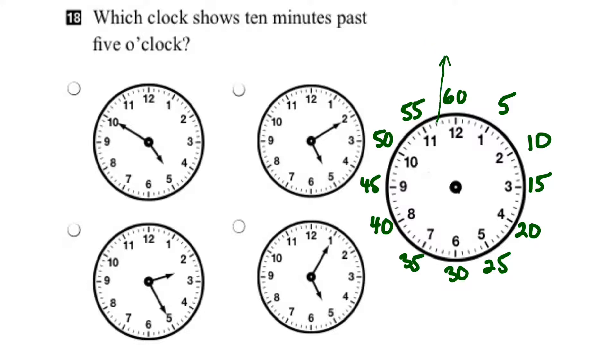I'll move the minute hand or the long arrow into my clock face. We want 10 minutes past, so what we do is point the arrow to the 10 minute past mark, which is the number 2.